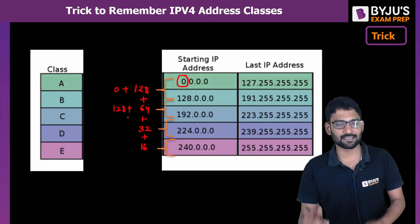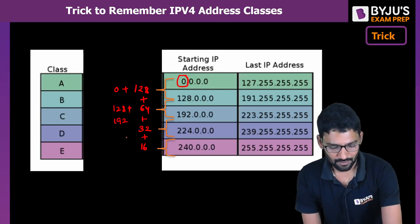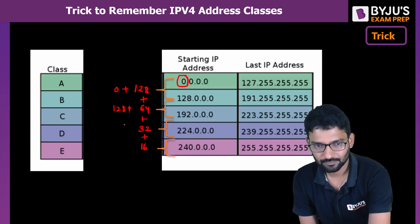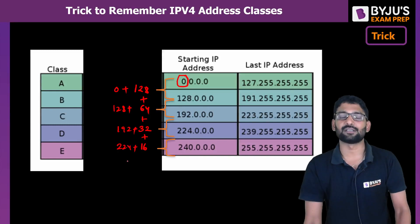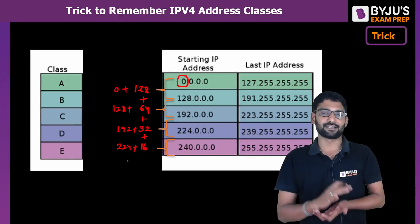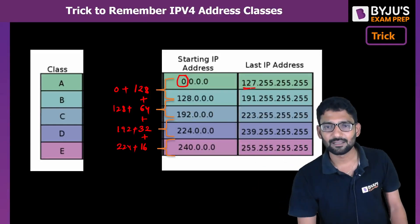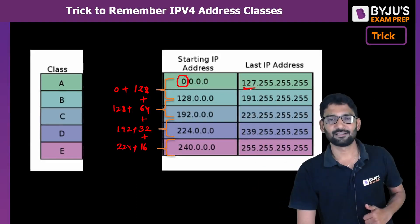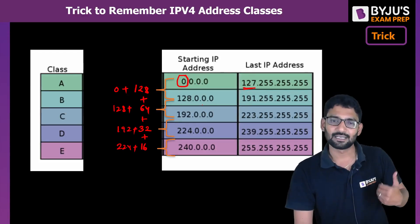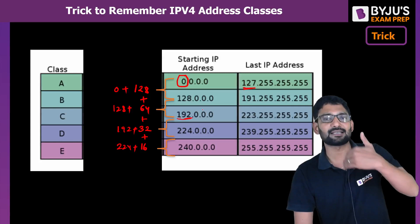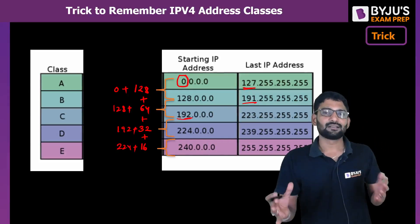Once you know the starting number of each class, the previous number is the last address of the prior class. Class B starts at 128, so Class A ends at 127. Class C starts at 192, so Class B ends at 191. Class D starts at 224, so Class C ends at 223. Class E starts at 240, so Class D ends at 239. It's a very simple trick.